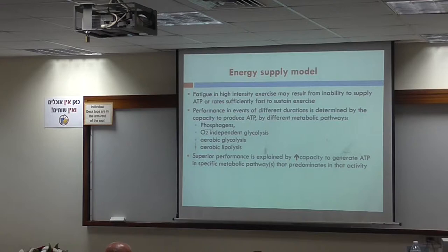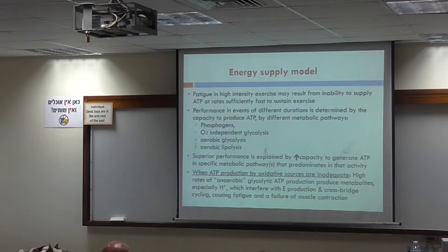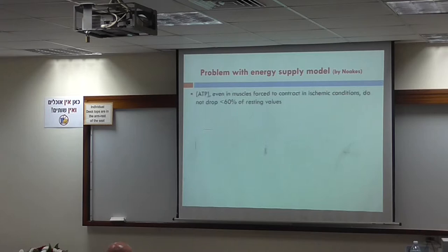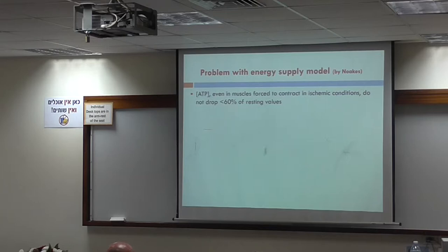If we train ourselves, we'll increase ATP production capacity in specific pathways sport-specific. When oxidative sources are inadequate, cross-bridge cycling becomes impaired, causing fatigue and eventually muscle contraction failure. However, the problem with the energy supply model is that ATP concentration in muscle, even forced to contract under ischemic conditions, does not drop below 60% of resting value — so you don't see a sufficient ATP drop to support the supply theory.